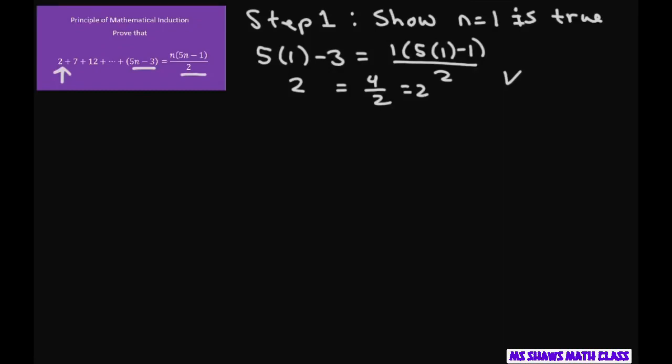Now, if I did, you don't have to, but if you did n equals 2, what you would do is you'd plug 2 in here. And that should equal the sum of 2 plus 7, which equals 9 because you're doing the sum of the first two terms.